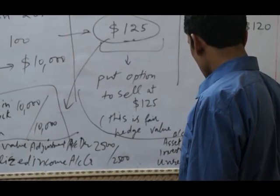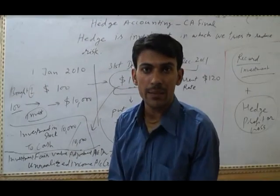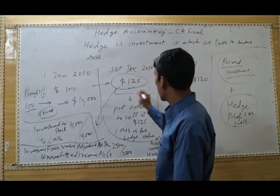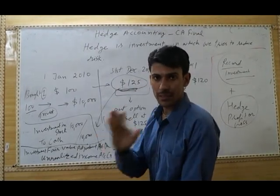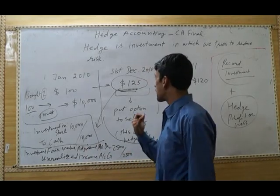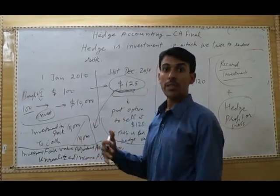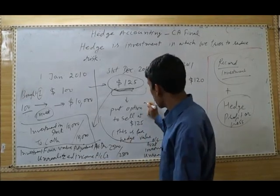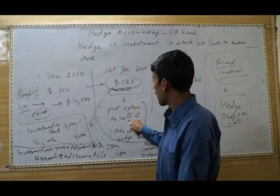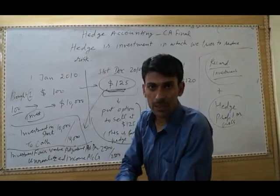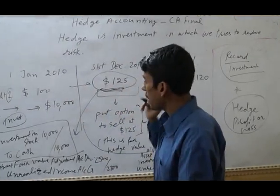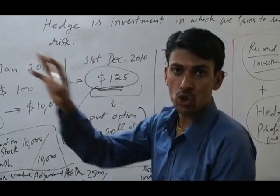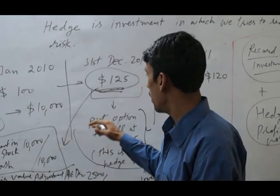Now if the businessman thinks that his share value will decrease, the business will get a loss. To reduce this risk, the businessman will do another investment and go to another contractor. This contractor may agree to sell the production at $125 whether the price decreases or increases — the businessman will sell his investment at $125. This is called a put option to sell.